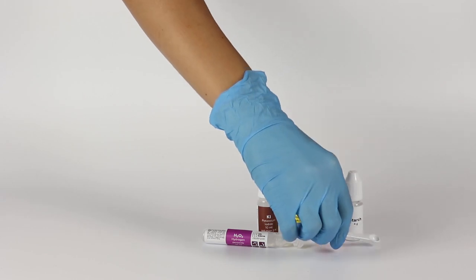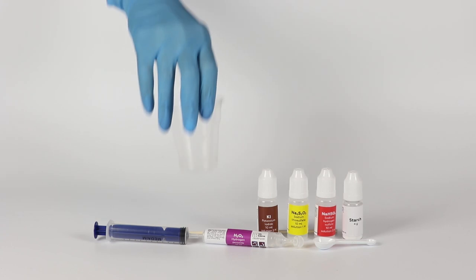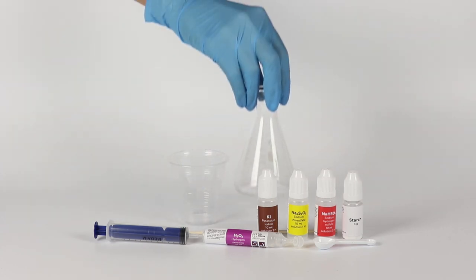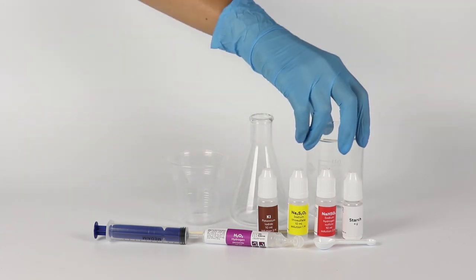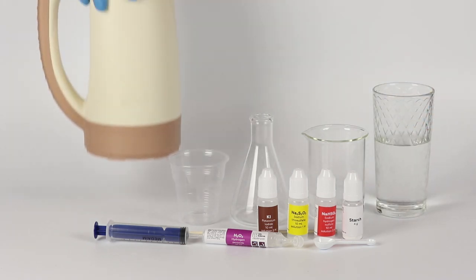Take a double-ended measuring spoon, a wooden stick, and a syringe from the experiment set. Take a disposable cup, a flask, the beaker from the starter kit. Also, prepare some cold water and boiling water in advance.